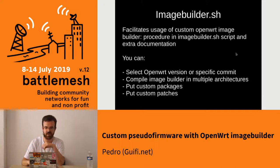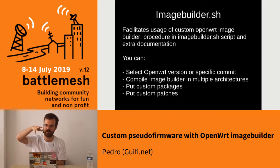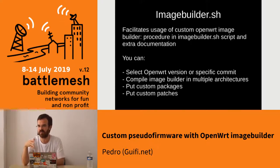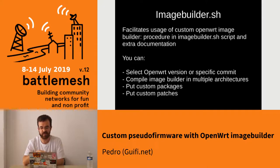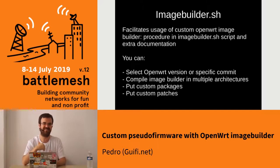We have the image builder thing that facilitates usage of custom OpenWrt images. The script is 150 lines and I have extra documentation. What can you do with that? You can select a specific OpenWrt version, compile image builder in multiple architectures, put custom packages, and put custom patches. I know these are very easy things, but if you try to do it on your own you will end up with 5 or 10 hours of work. And if you don't automate the process, one month later you'll need to understand what you did all over again.